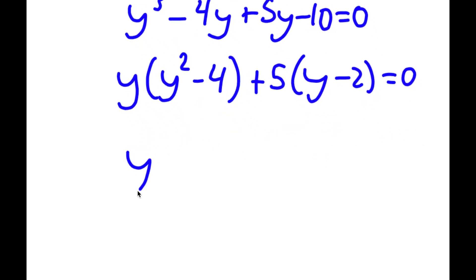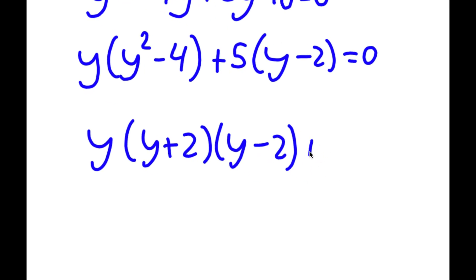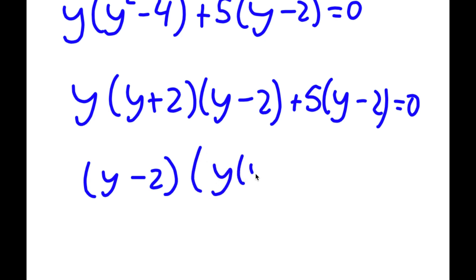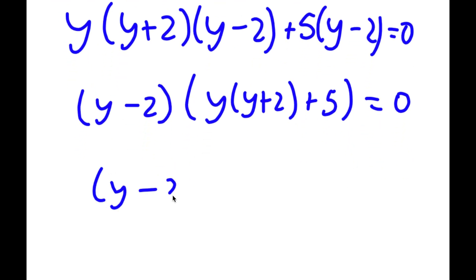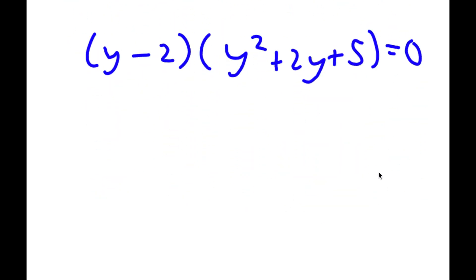Now y squared minus 4 is the same thing as y plus 2 times y minus 2. So I have y times y plus 2 times y minus 2 plus 5 times y minus 2 is equal to 0. If I factor out y minus 2, I get y minus 2 times y times y plus 2 plus 5, which is the same thing as y minus 2 times y squared plus 2y plus 5, equal to 0.